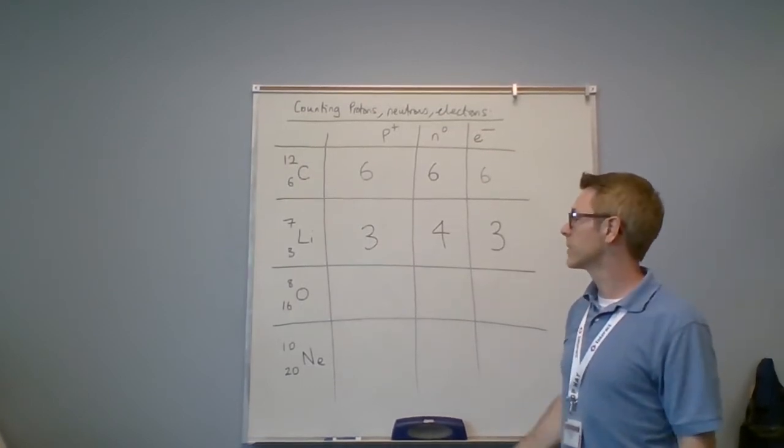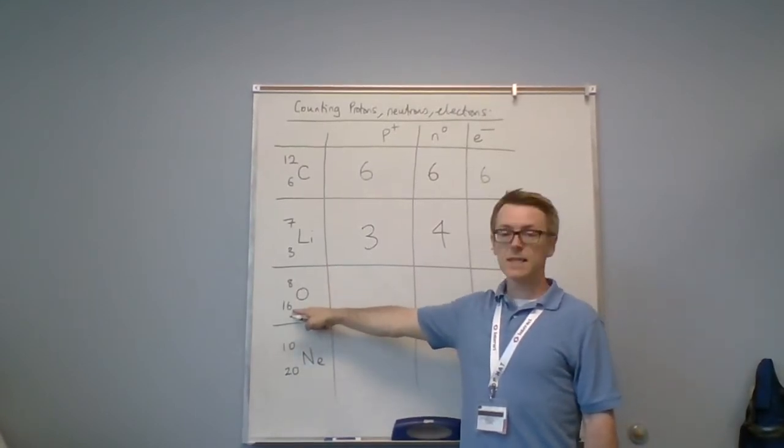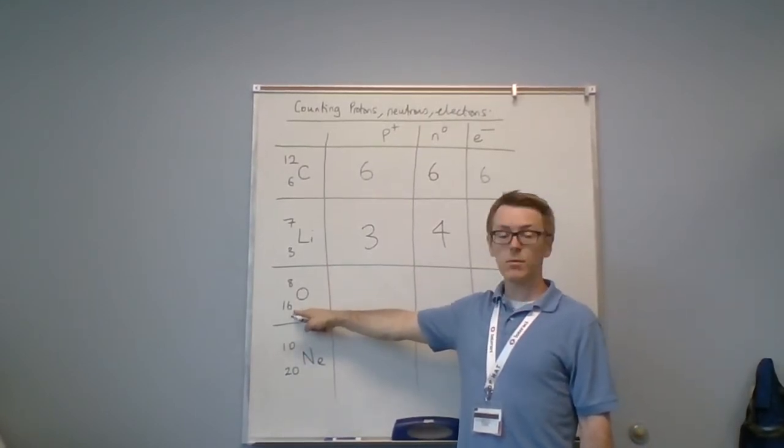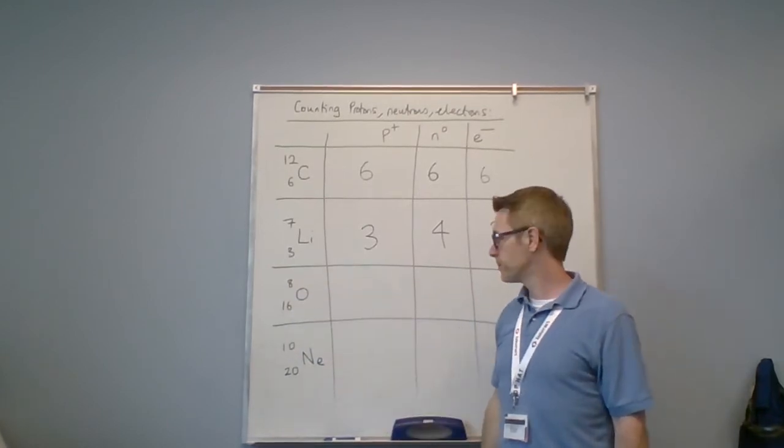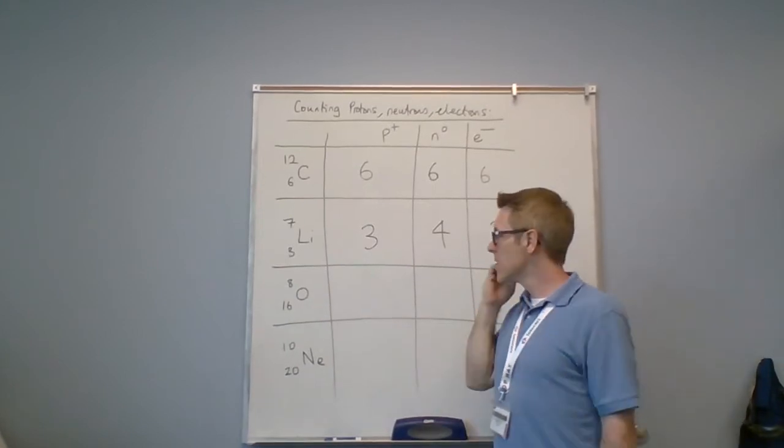Here the numbers are inverted—A is now down below. I know this is A because 16 is larger than 8, so on this occasion 8 is the smallest, so 8 is Z. So I have 8 protons. 16 minus 8 is 8 neutrons. It's neutral, so I have 8 electrons.